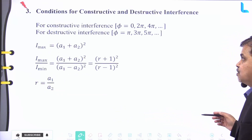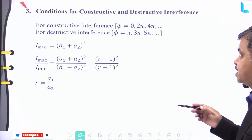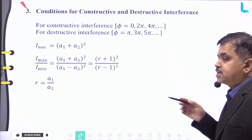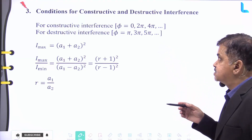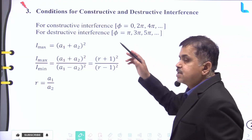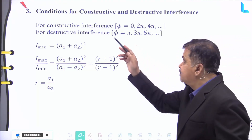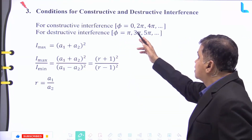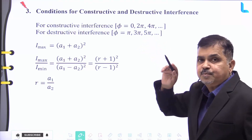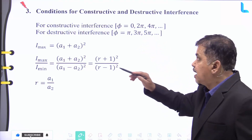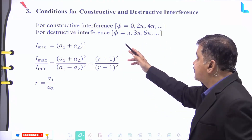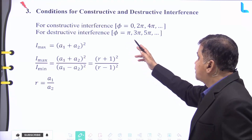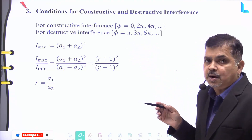Point number three: conditions for constructive and destructive interference. For constructive interference, φ = 0, 2π, 4π, and so on. For destructive interference, φ = π, 3π, 5π, and so on.